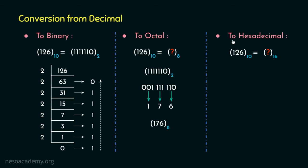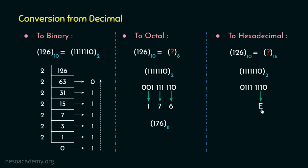Using a similar method we can also perform the decimal to hexadecimal conversion. If we have already obtained the equivalent binary value, we can use it for conversion to hexadecimal as well. Since 4-bit binary numbers have a special significance to the hexadecimal symbols, we start grouping 4 bits from the LSB to MSB. We have one less bit in the most significant group, so we append a 0. 1110 is 14 in decimal, which in hexadecimal is E, and 0111 in hexadecimal is 7. So the hexadecimal equivalent of 126 is 7E.